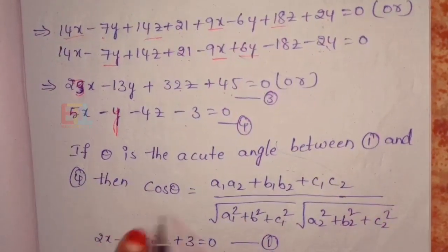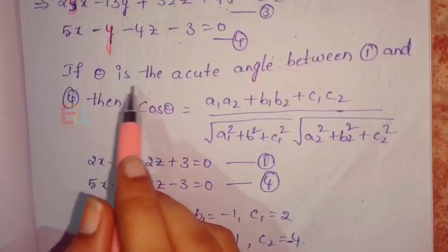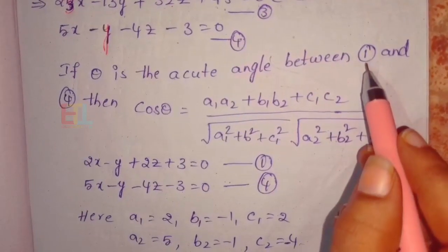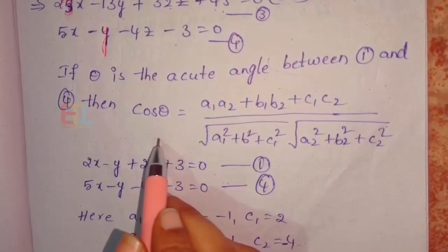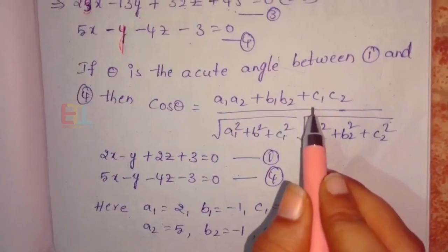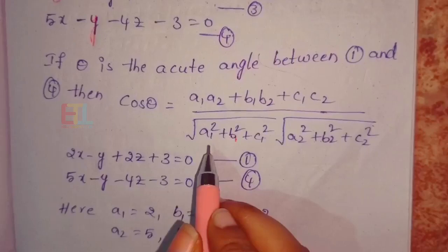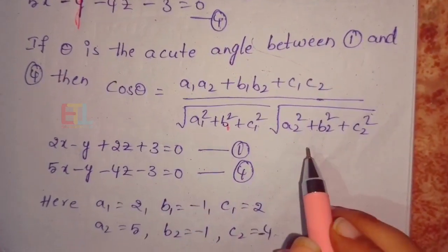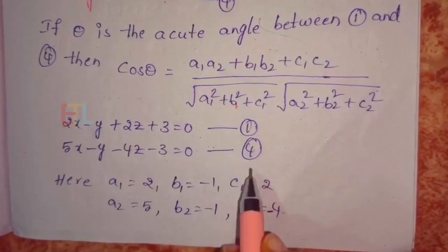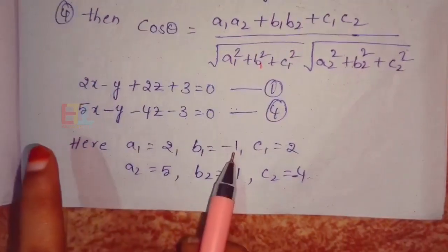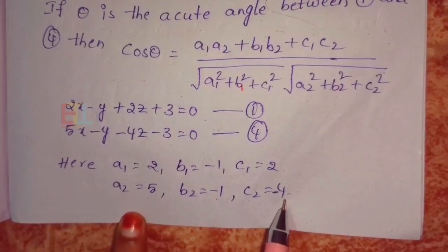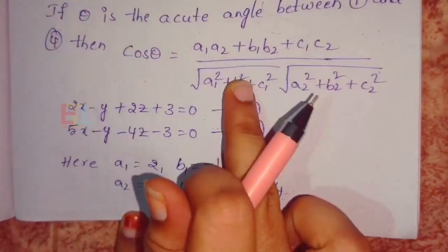We take equation 1 and equation 4 to find the angle. If theta is the acute angle, then the angle between the equations is found using: cos theta equals (a1·a2 plus b1·b2 plus c1·c2) divided by (root of (a1² + b1² + c1²) times root of (a2² + b2² + c2²)). From equation 1: a1=2, b1=−1, c1=2. From equation 4: a2=5, b2=−1, c2=−4.